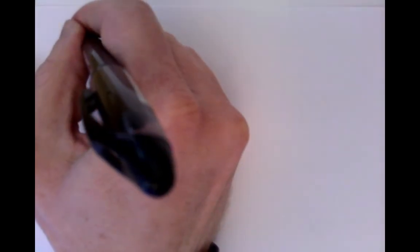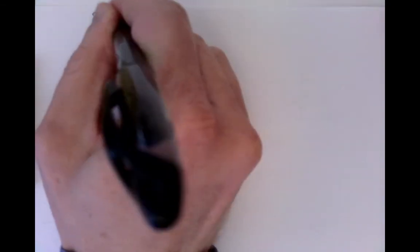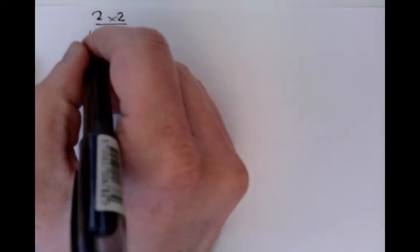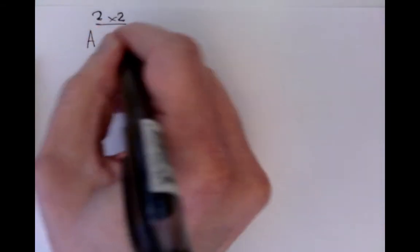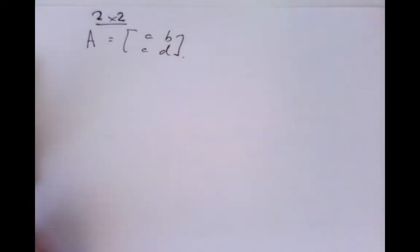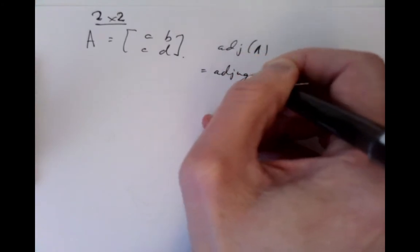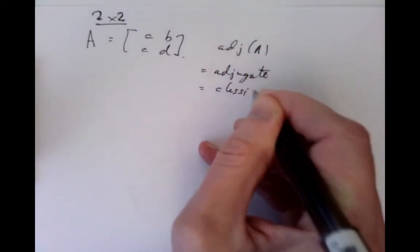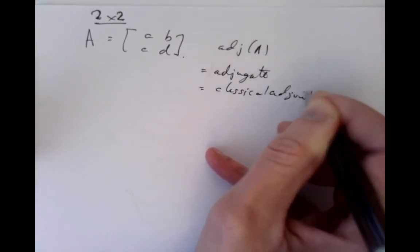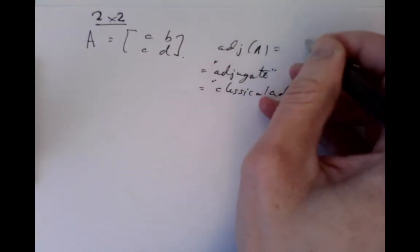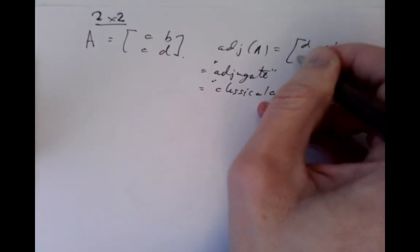There's a classical formula for 2×2 matrices that defines the inverse if it exists. For a 2×2 matrix A = [a, b; c, d], we define the adjugate of A — also called the classical adjoint — as [d, -b; -c, a]. So it's formed by swapping the a and d entries and changing the signs on the b and c entries.